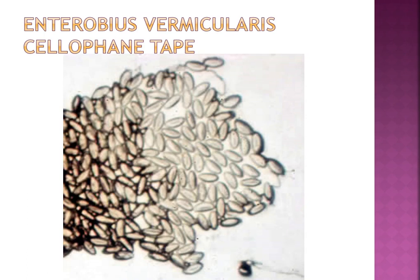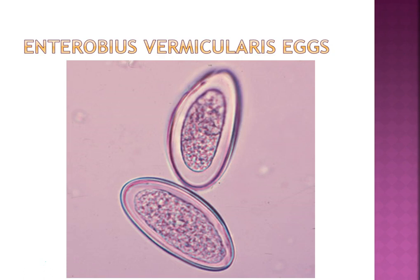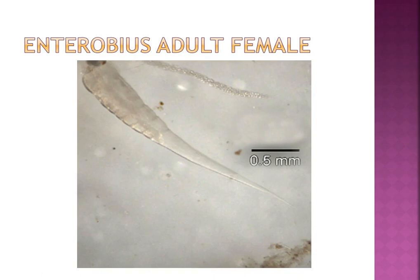Enterobius (pinworm) is the most common helminth in the United States. The egg is oval, flattened on one side, with a double-layered cell wall. Females have a pin-shaped tail — that's where they get their name. Diagnosis is the cellophane tape procedure. Auto-infection or retro-infection can occur when the patient infects themselves with their hand, or the worm travels outside the body, lays eggs, and restarts the cycle. Patients have itching, irritability, difficulty sleeping, nausea, and vomiting. Usually the entire family is treated.